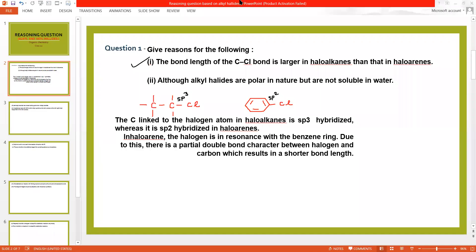You can note its reason from here. The carbon atom linked to halogen atom in haloalkane is sp3 hybridized, whereas it is sp2 hybridized in haloarenes. This is the first reason. In haloarenes, one more cause was there that it shows resonance structure with benzene ring. Due to this there is partial double bond character between halogen and carbon which results in shorter bond length.